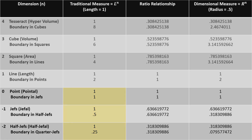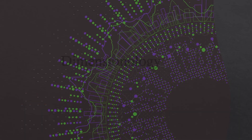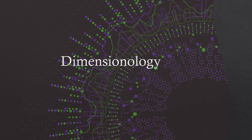Contrary to our current understanding of a point being a location, not only should a point be thought of as an object, but consistent with every other object, each point has a boundary of 1 dimension less — a Jeff — and that Jeff has a value of 1. This is Jeff Szabo for Dimensionology. Up next: the case for conversion.